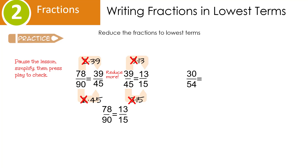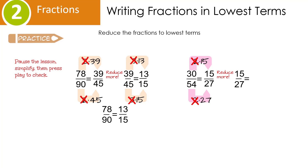Let's look at 30 over 54. I happen to know that 6 times 5 is 30, and 6 times 9 is 54, so I could have used 6 as my greatest common factor. Let's pretend we didn't remember that. I know that 2 goes into 30 — 2 times 15. Since 54 is an even number, 2 also goes into it — 2 times 27. I cancel out my common factor and end up with 15 over 27. I can reduce more: 3 times 5 is 15, and 3 times 9 is 27. I cancel out my common factors and end up with 5 over 9. It turns out that 30 over 54 reduces to 5 ninths.